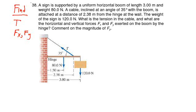Here we have the classic problem of supporting a sign with a horizontal boom that's hung from a building. Some of the forces acting on the boom have already been indicated. The sign at the end of the boom has a weight of 120 newtons — we'll call that capital W — and the weight of the boom itself is 80 newtons, which we'll call little w. We also need to add the reaction forces between the boom and the wall at the hinge, labeled Fx and Fy. We want to find the values of the tension supporting this sign and the two reaction forces Fx and Fy.